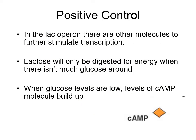Positive control also takes place. Not only do we have this negative control — removal of the repressor by lactose — but there's also positive control. The lac operon and other molecules further stimulate transcription. Lactose is great when there isn't much glucose around. If there's both lactose and glucose, the cell would rather break down glucose. So as long as there's glucose around, we don't want a lot of the lactase enzymes encoded by the lac operon. We don't need much transcription of it.